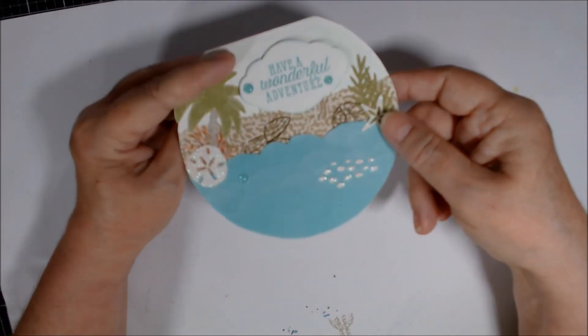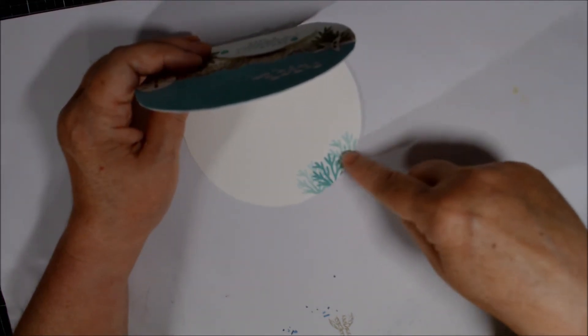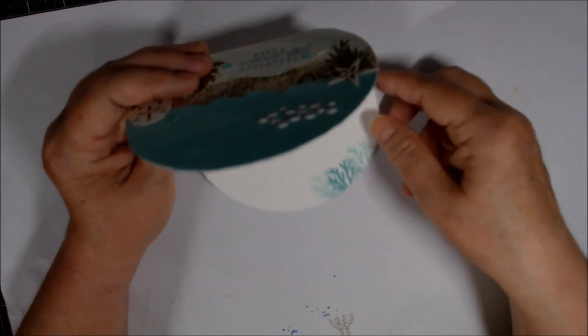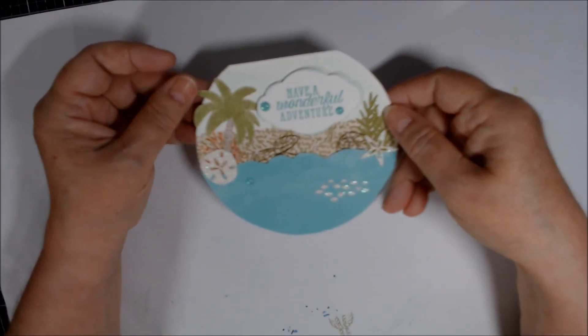And I did stamp some of the coral in Coastal Cabana. I stamped it twice light, and then once full strength, just down in the corner. I thought that gave it a little something, something. So yeah, that's my project for this month for the 15th.